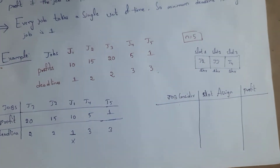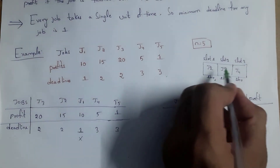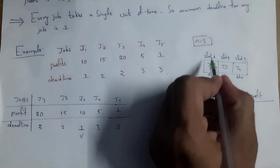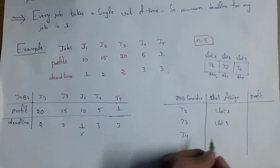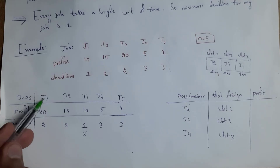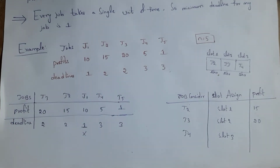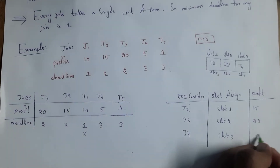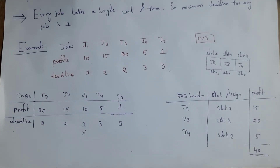All three slots are now filled, so we stop. The selected jobs are J2 in Slot 1, J3 in Slot 2, and J4 in Slot 3. The profit of J2 is 15, profit of J3 is 20, and profit of J4 is 5, giving a total profit of 40. This concludes the first example of the Job Sequencing problem.